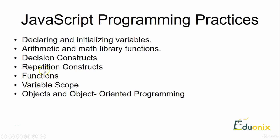In this chapter, we are going to focus on repetition constructs, functions, variable scope, objects, and object-oriented programming. This is like a second section, which will have an overview about repetition constructs, functions, variable scope, and many more.